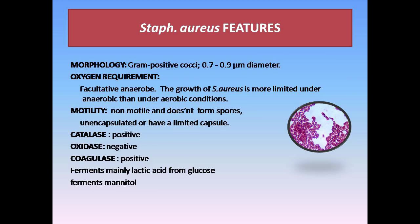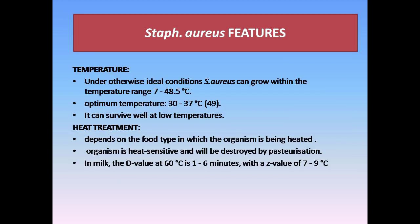Now let's discuss the features of Staphylococcus aureus. It is a gram-positive cocci-shaped bacterium having a size of about 0.7 to 0.9 micrometers in diameter. They are facultative anaerobic — they can survive in both aerobic and anaerobic conditions. They are non-motile and do not form spores. They are unencapsulated or have a limited capsule. They are catalase-positive, oxidase-negative, and coagulase-positive. They can ferment lactic acid from glucose and also ferment mannitol. Under ideal conditions, S. aureus can grow within a temperature range of 7 to 48.5 degrees Celsius, with an optimum range of 30 to 37 degrees Celsius, and they can survive well at low temperatures.